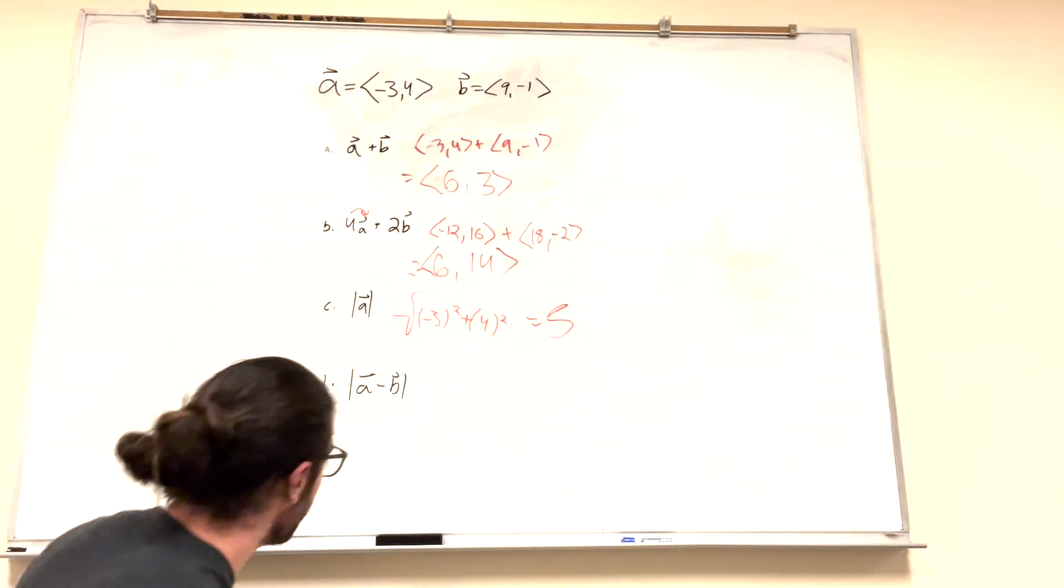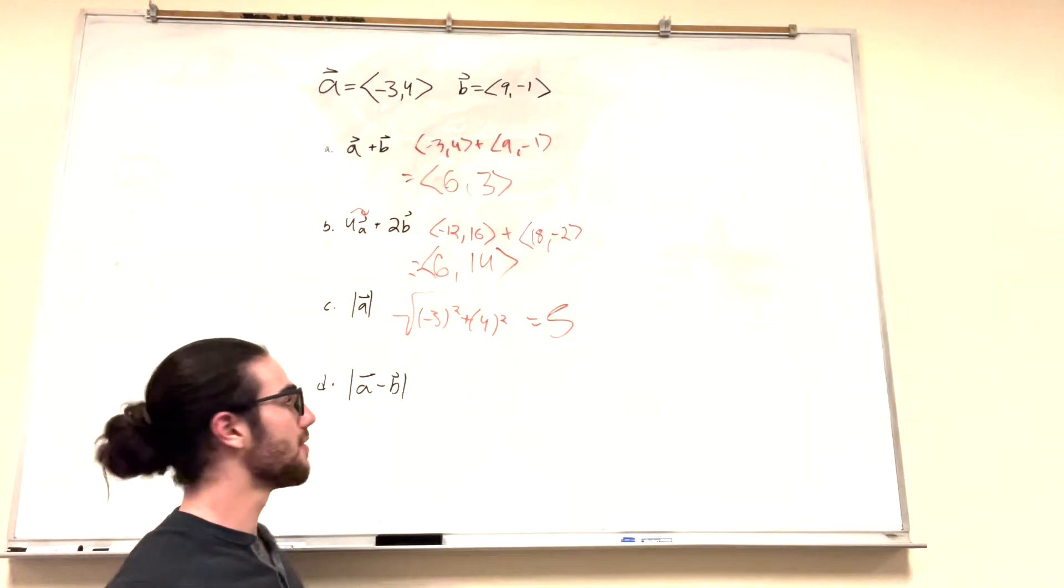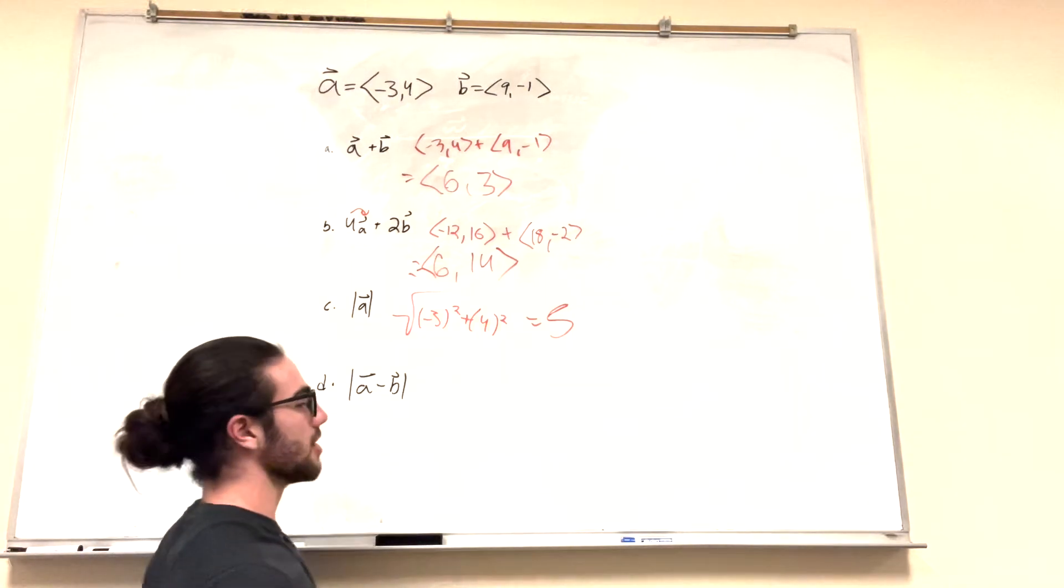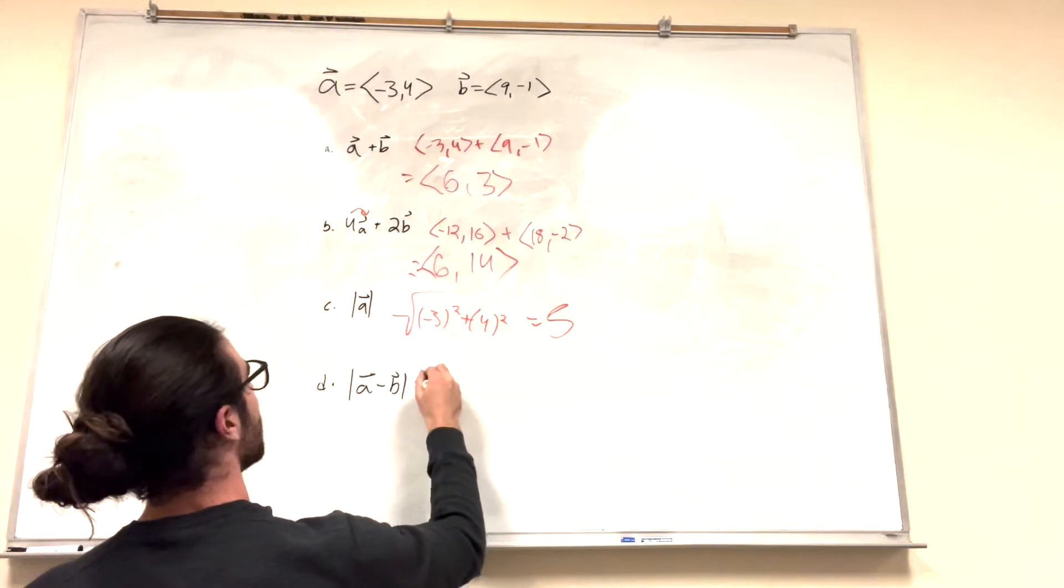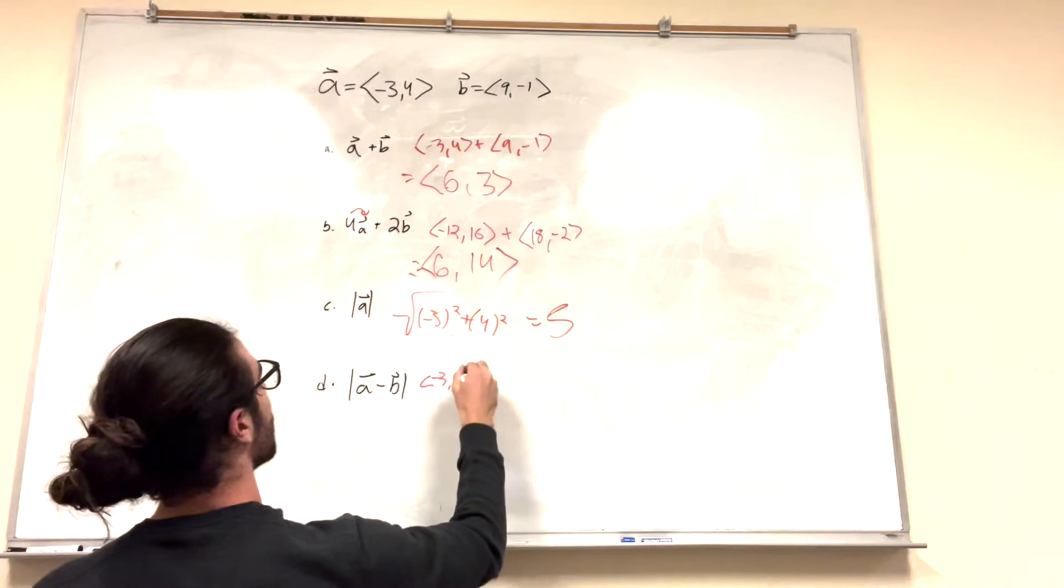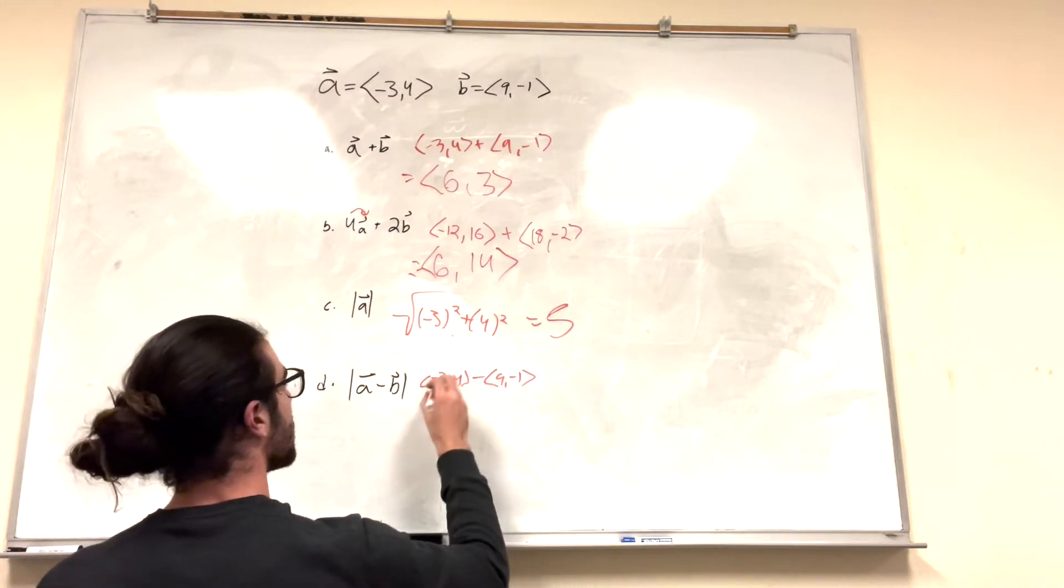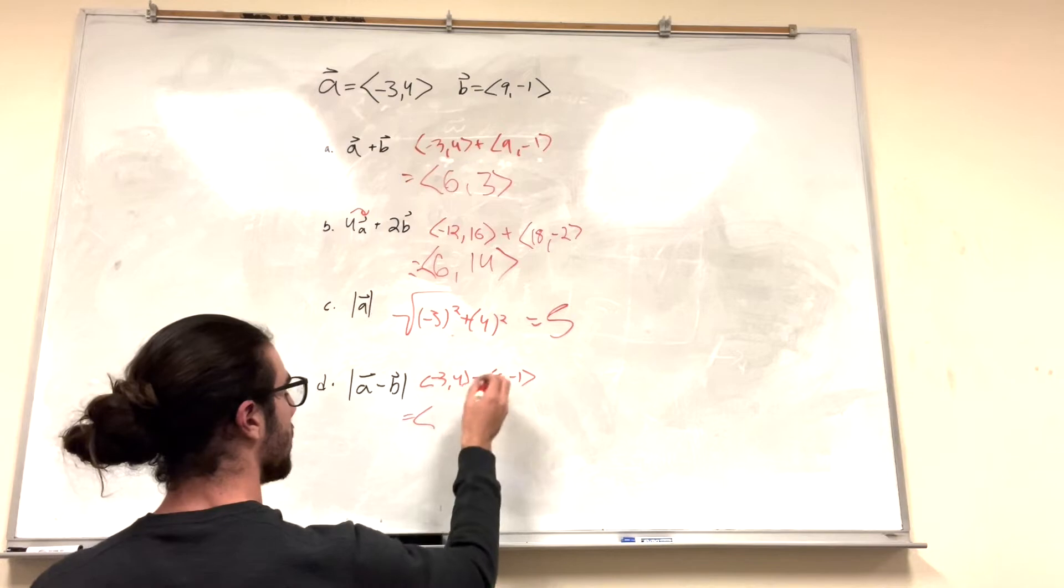All right, now it says the magnitude of a minus b. So what we're going to do is we're going to find a minus b first, and then we can take the square root and do that. So a minus b. So it's going to be negative 3, 4, minus 9, negative 1.